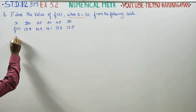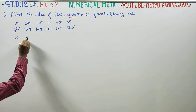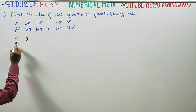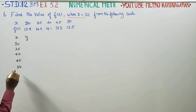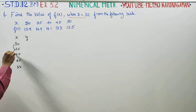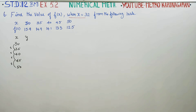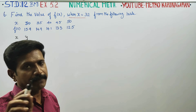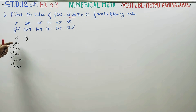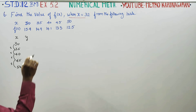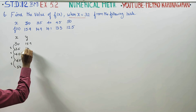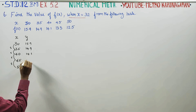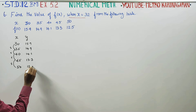The given x values are 30, 35, 40, 45, 50, with intervals 30–35, 35–40, 40–45, 45–50. The corresponding y values (f(x)) are 15.9, 14.9, 14.1, 13.3, and 12.5.